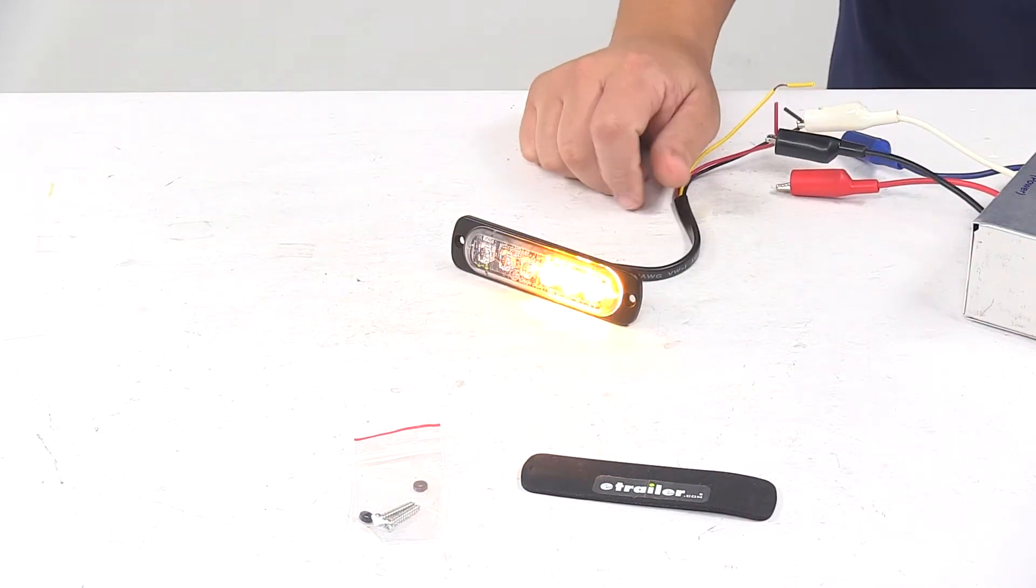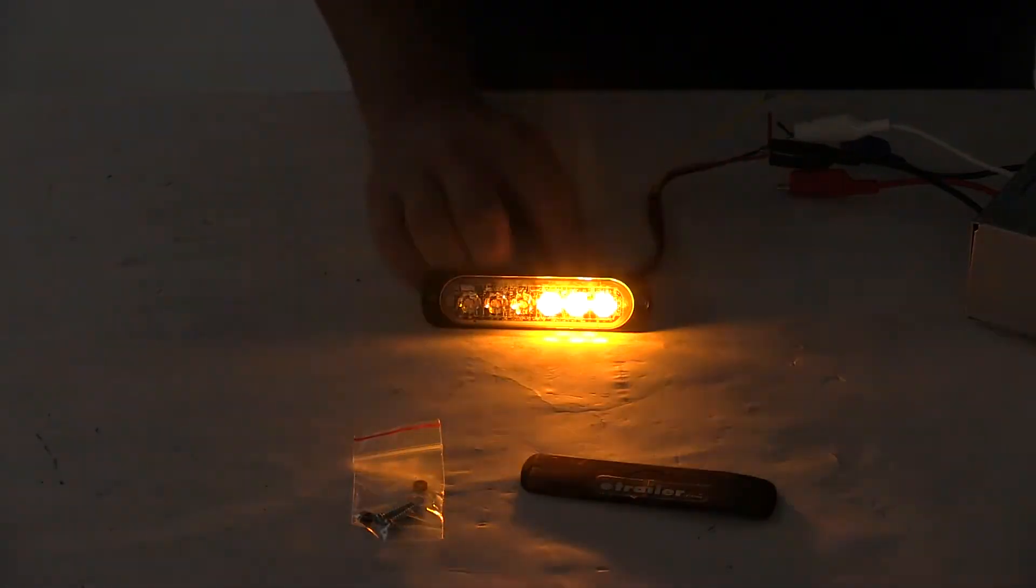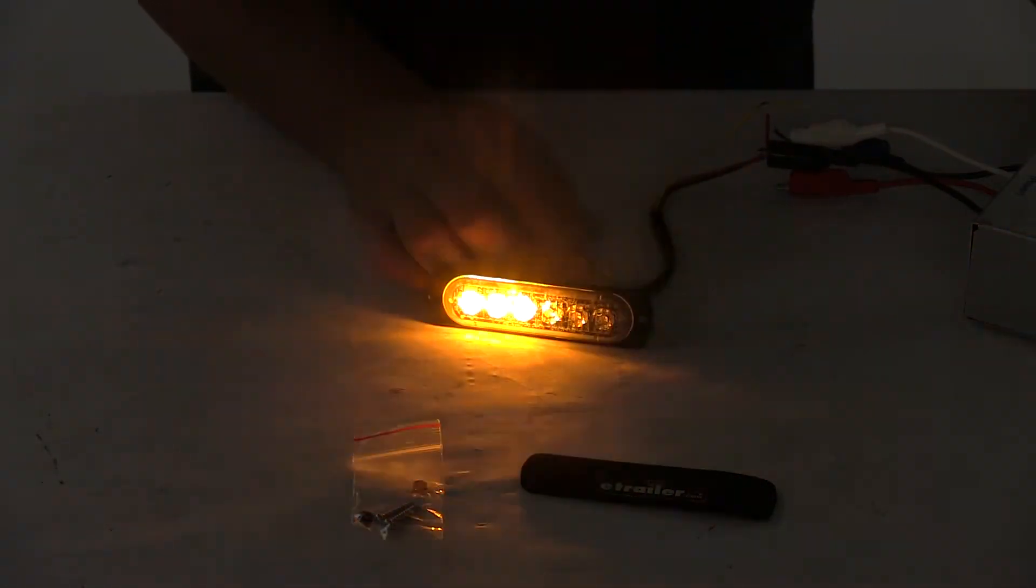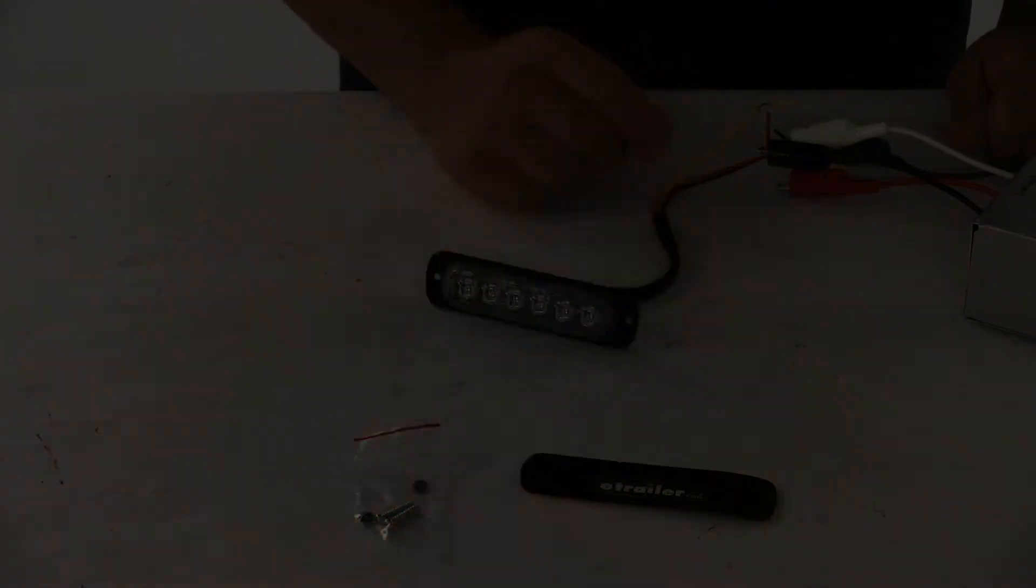It has multiple flash patterns to choose from. It's a six diode or six LED design so the multi-diode design really helps optimize the overall light output. The voltage is 12 to 24 volts and amperage is one amp at 12 volts.